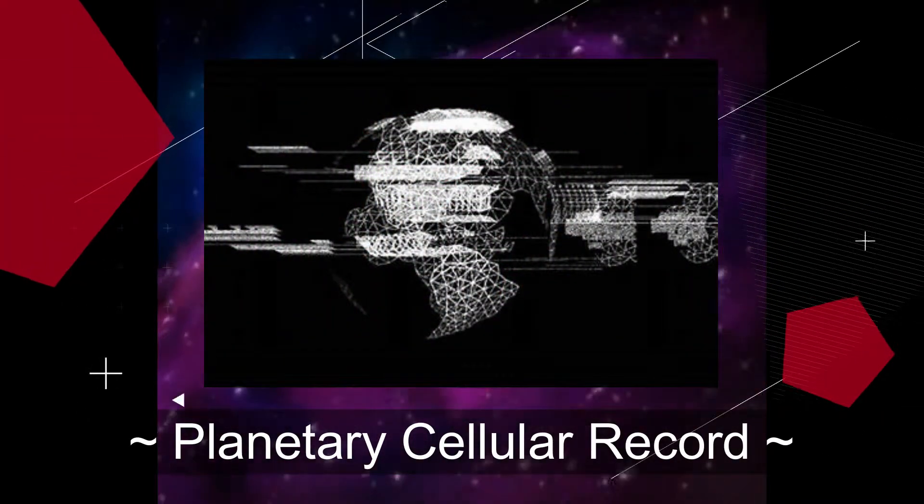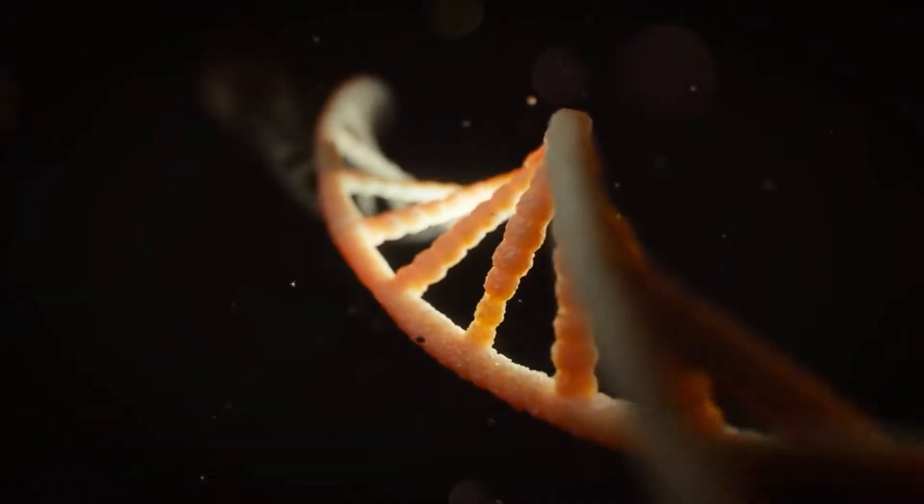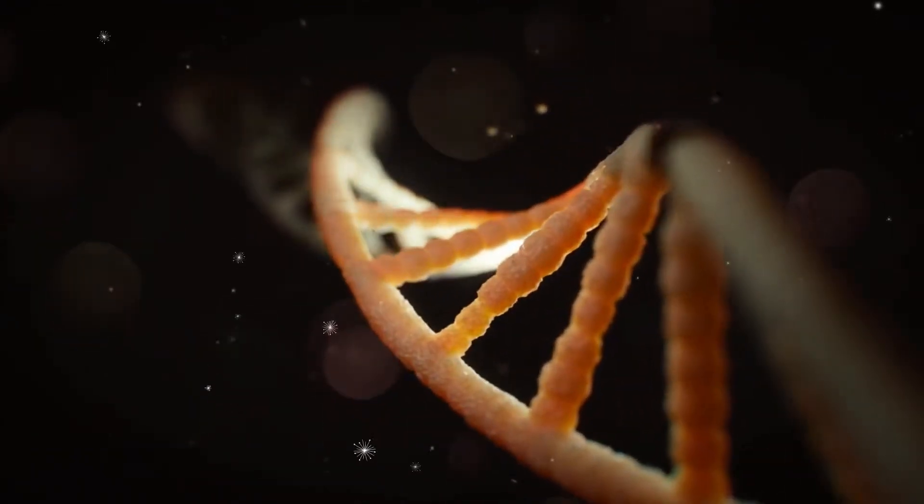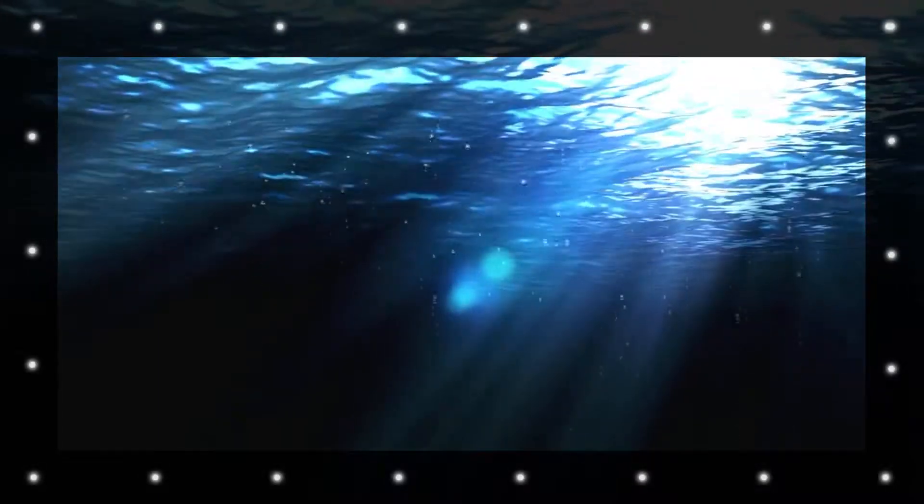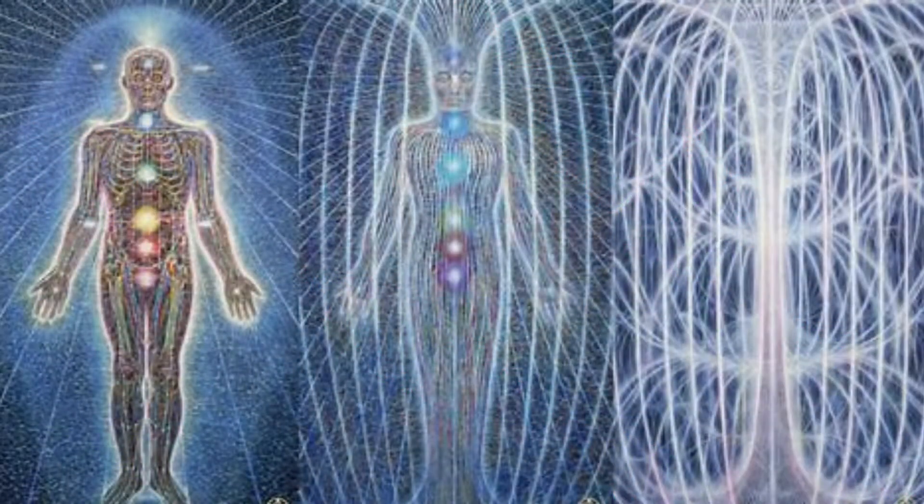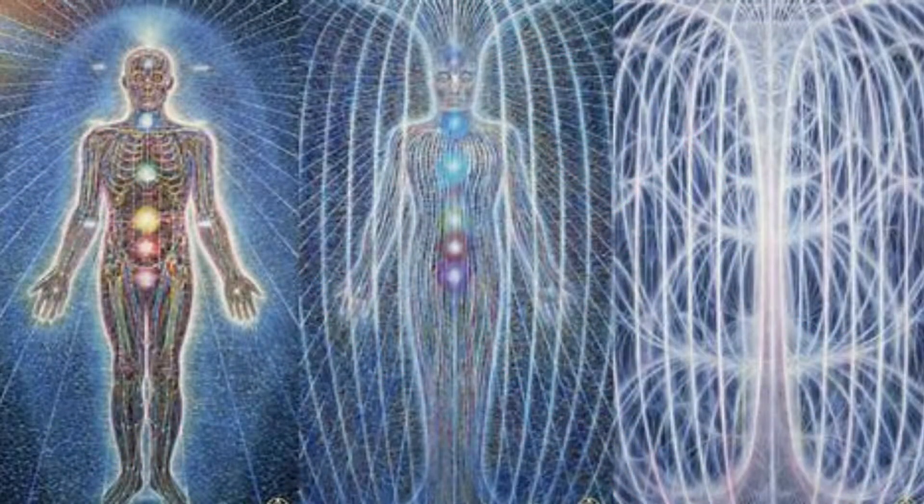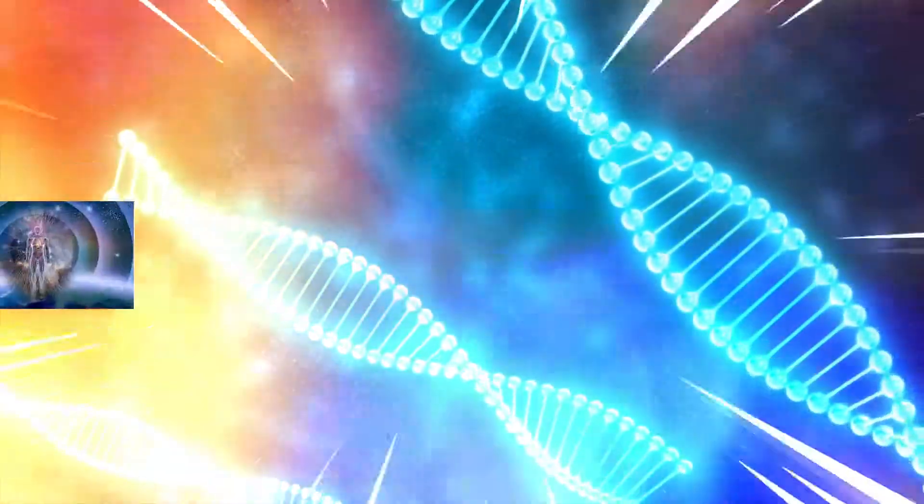This change impacts the planetary cellular record and further changes the configuration of particle matter composition and how that is arranged in the raw material of the human body. Proteins are the principal performers within the cell and carry out the duties specified by the information encoded in the genes.